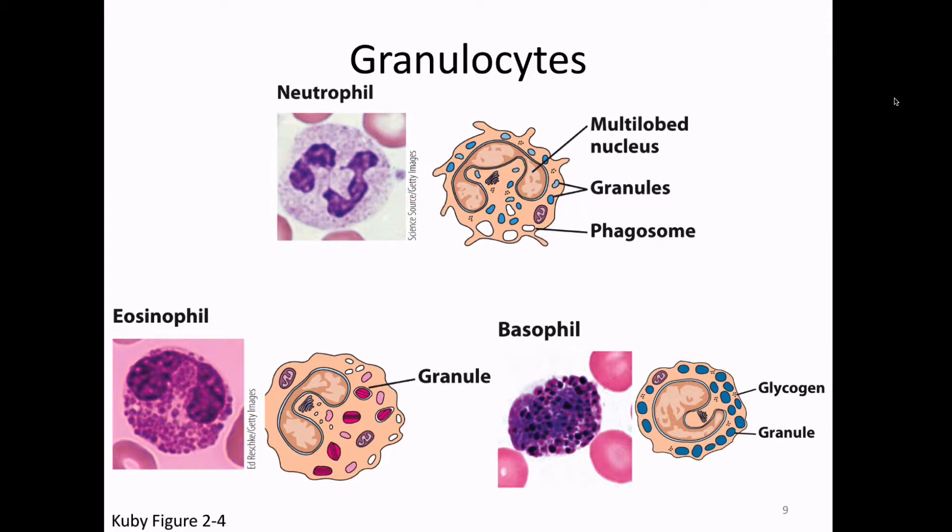We didn't name these cells specifically on the chemicals in their granules, because the original people who named them around 1900 didn't know the sophisticated chemistry involved — they just knew what the granules reacted with. The neutrophil granules were neutral, eosinophil granules reacted with eosin, and basophil granules were basic. So those names are based on the reaction with different compounds and stains.